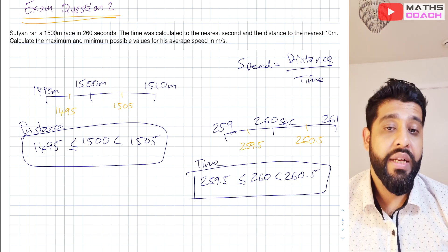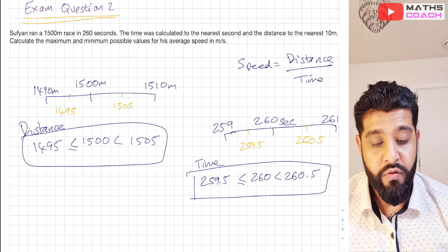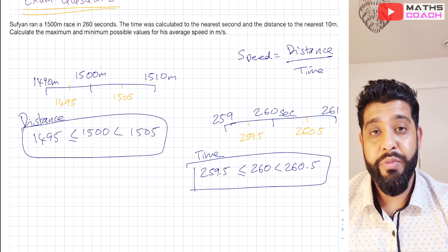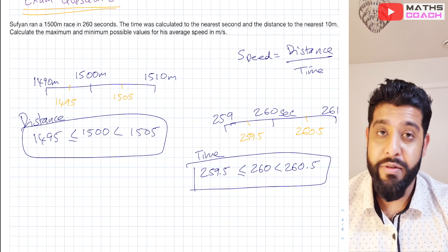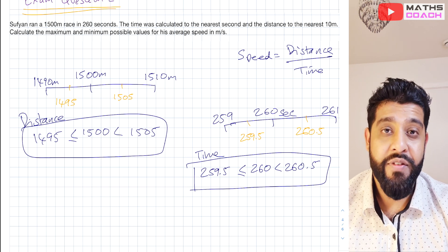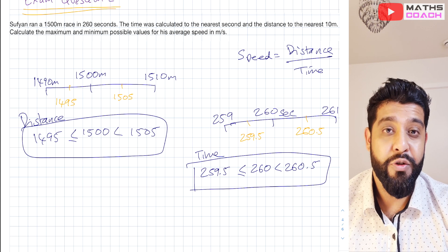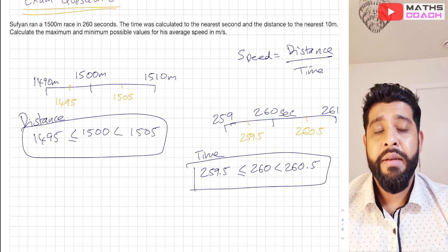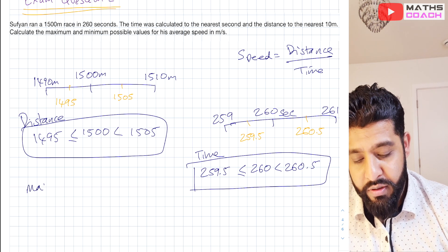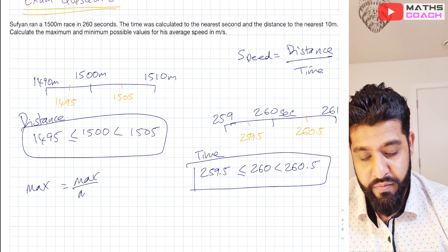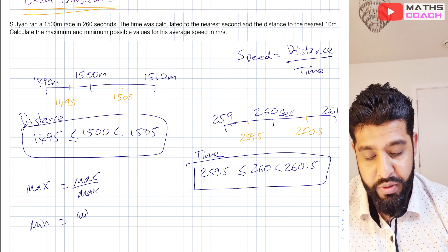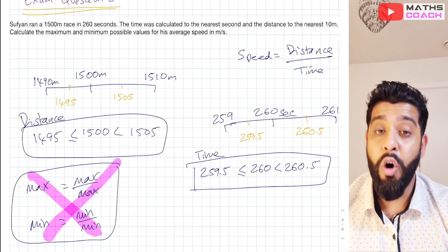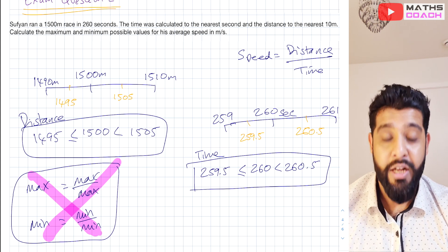The first thing you need to know is that speed equals distance divided by time. When it comes to division, finding the maximum and minimum is slightly different to what we did with multiplication for area. Some of you may think that to find the maximum you do maximum divided by maximum, and for minimum you do minimum divided by minimum. But this is totally incorrect — it's a common mistake students make in the exam, so you've got to be really careful.